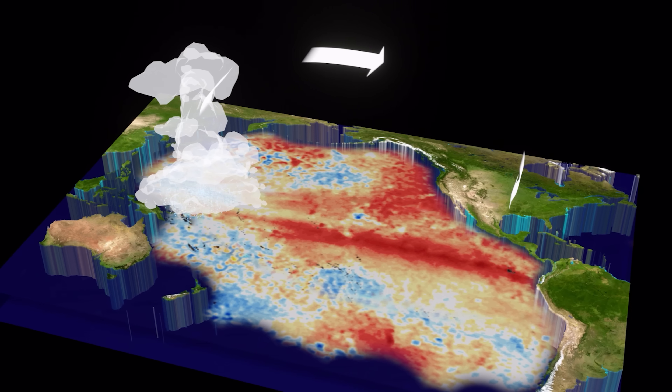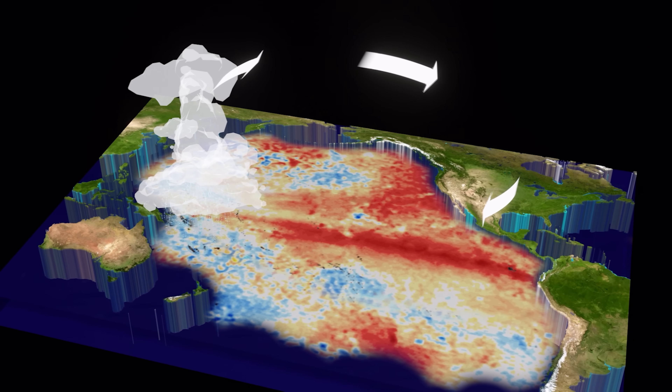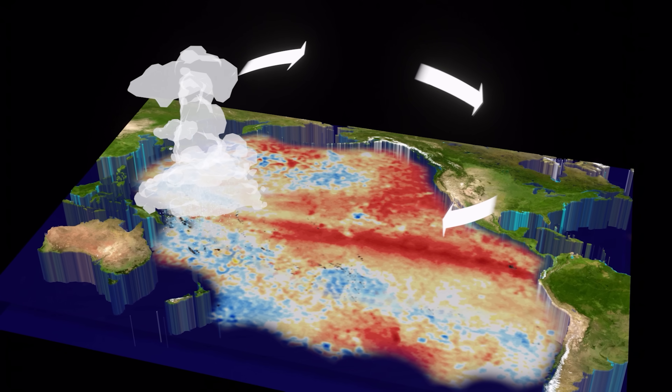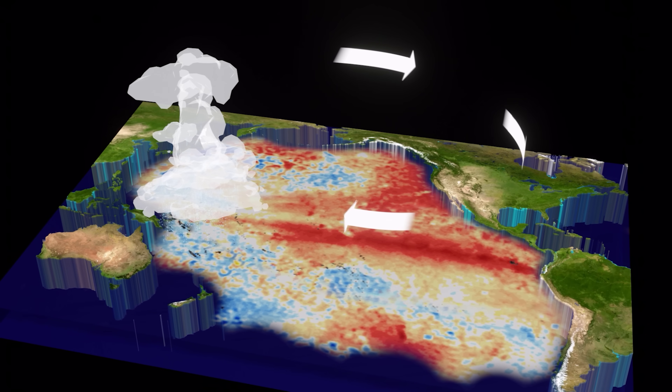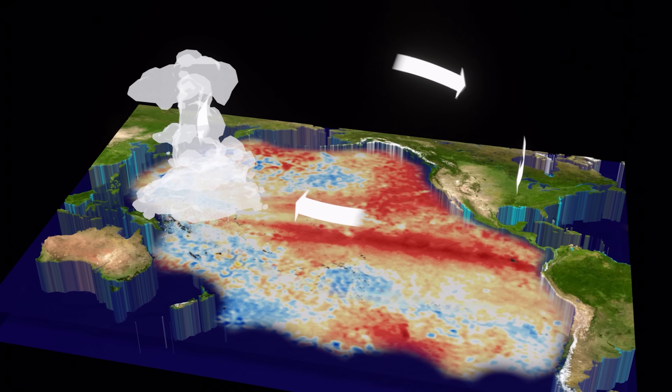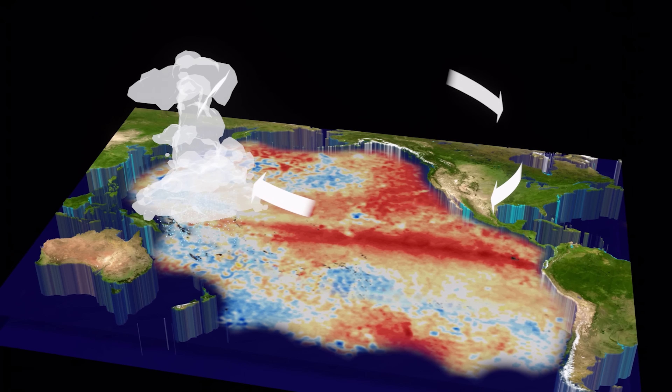El Niño refers to this current of warm water that appears off the west coast of South America from time to time. But confusingly, when people talk about El Niño, they could be referring to this current, or more likely, one of two connected things. The first is the El Niño Southern Oscillation, which is one of the most incredible things on Earth, and this current is just part of.